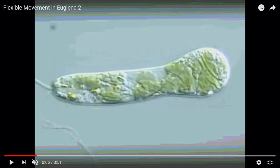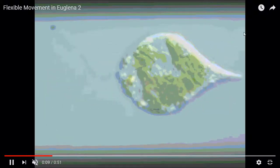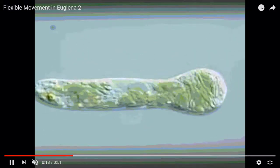Here is another organism Leeuwenhoek was able to see in the pond water. If you look at it, you'll notice it is mainly green — it has little green spots which are chloroplasts. This organism is able to photosynthesize, feeding itself using sunlight. It also has a little tail on it called flagella, which helps it move. This is something you would not be able to see with the naked eye, because its whole body is made up of just one cell — you need a microscope to see it.